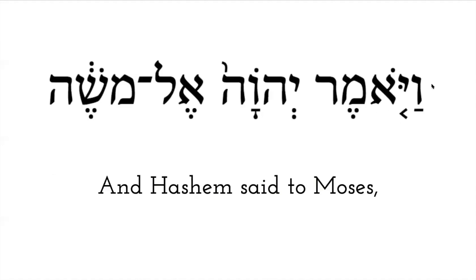The first word is vayomer. This is a vav with a patach that says 'va.' This is a yud and an aleph with a cholem which says 'o,' so this is 'yo,' va-yo. And this is a mem with a segol, and a resh closes out this syllable — so 'mer.' Va-yo-mer. This means 'and he said.'